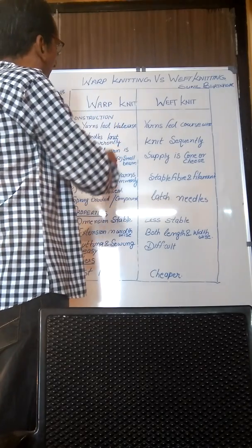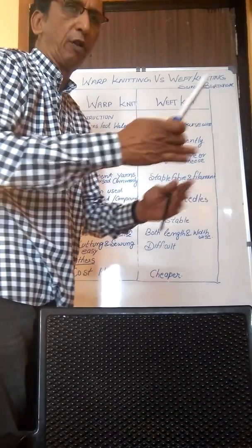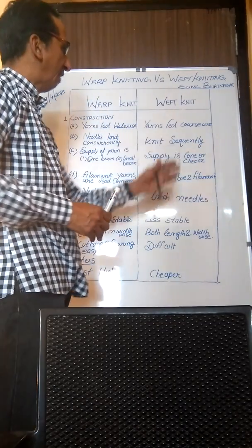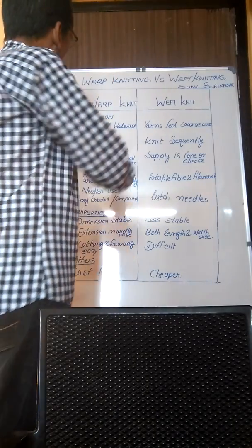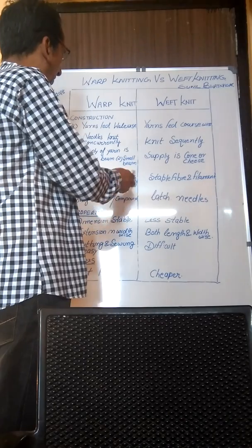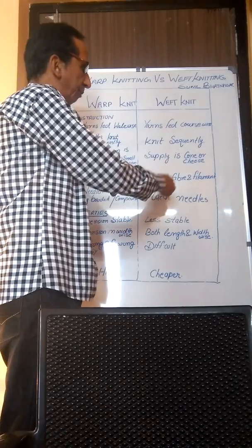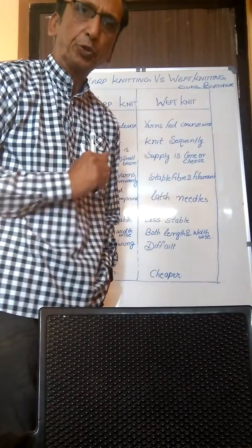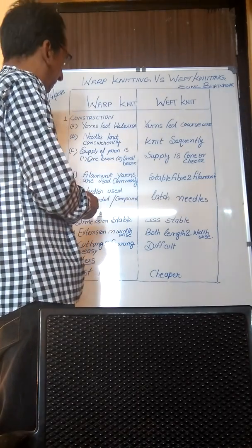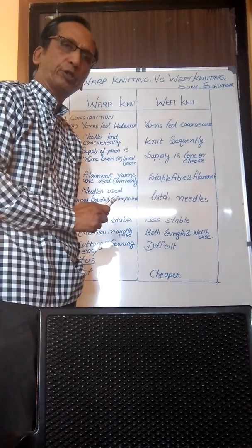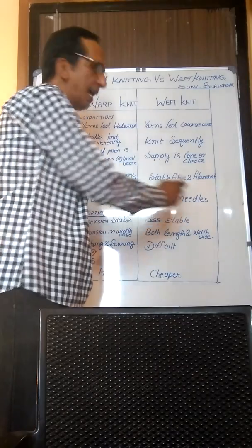Regarding yarn supply in warp knit, it is either one beam or a number of small beams. While in weft knit, the supply is in cone or cheese form. In warp knit, filament yarns are commonly used, while in weft knit, staple fibers as well as filaments are used. The needles used in warp knit are spring bearded or compound, while in weft knit, they are latch needles.